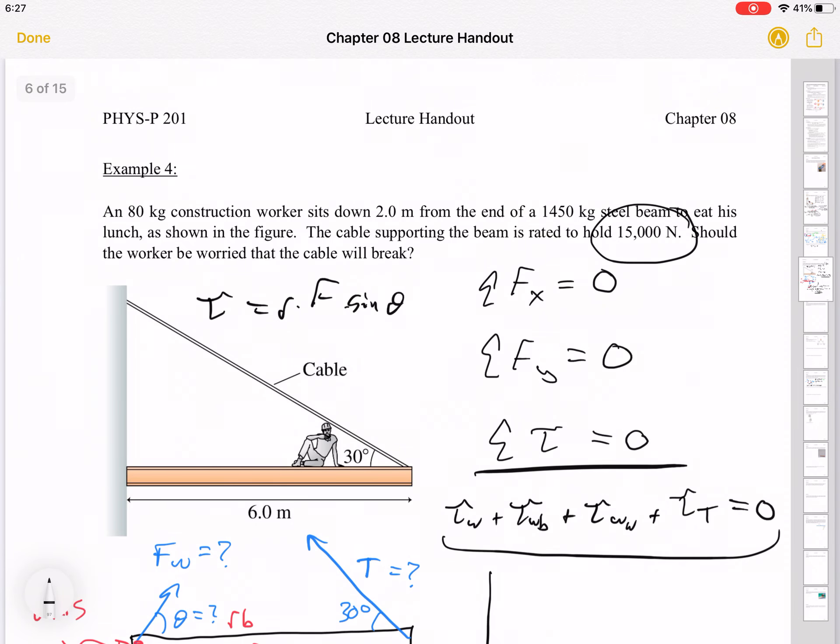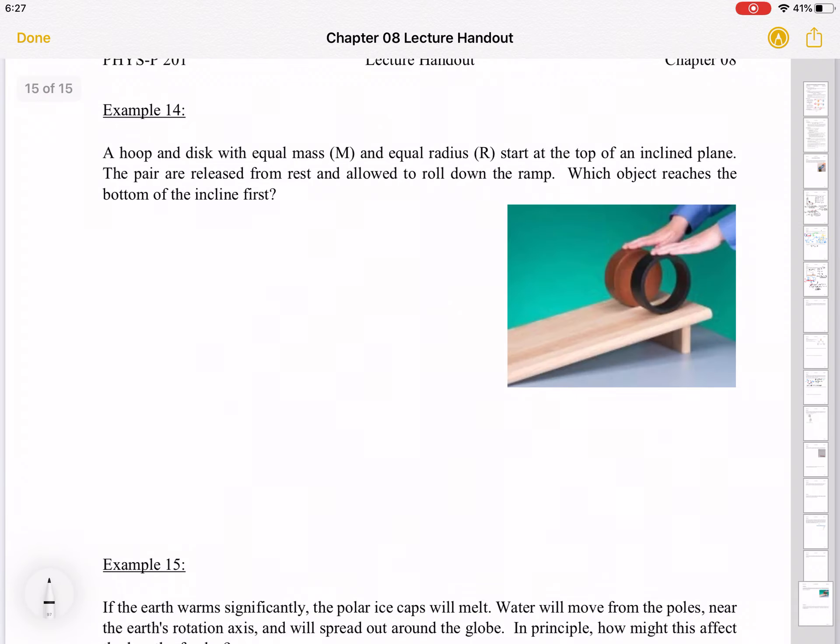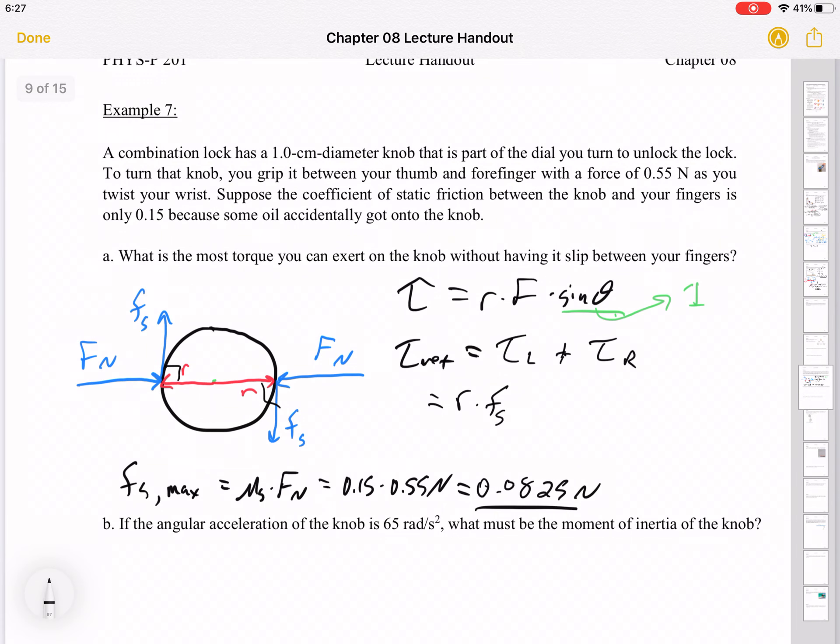Okay, so I just need to plug that in. So R. I'm in a special trouble here. R times the static frictional force. And the way I drew this, that's causing torque that would be negative. Right? The way I drew this, this would be clockwise. So technically, I should put a negative sign in there.